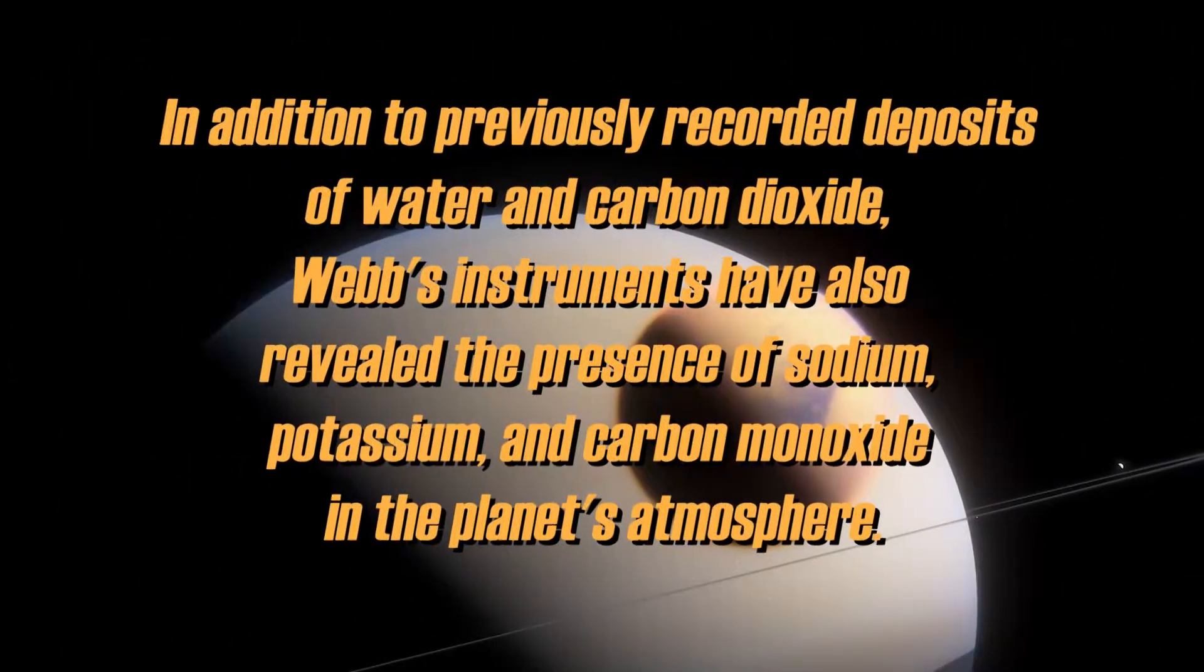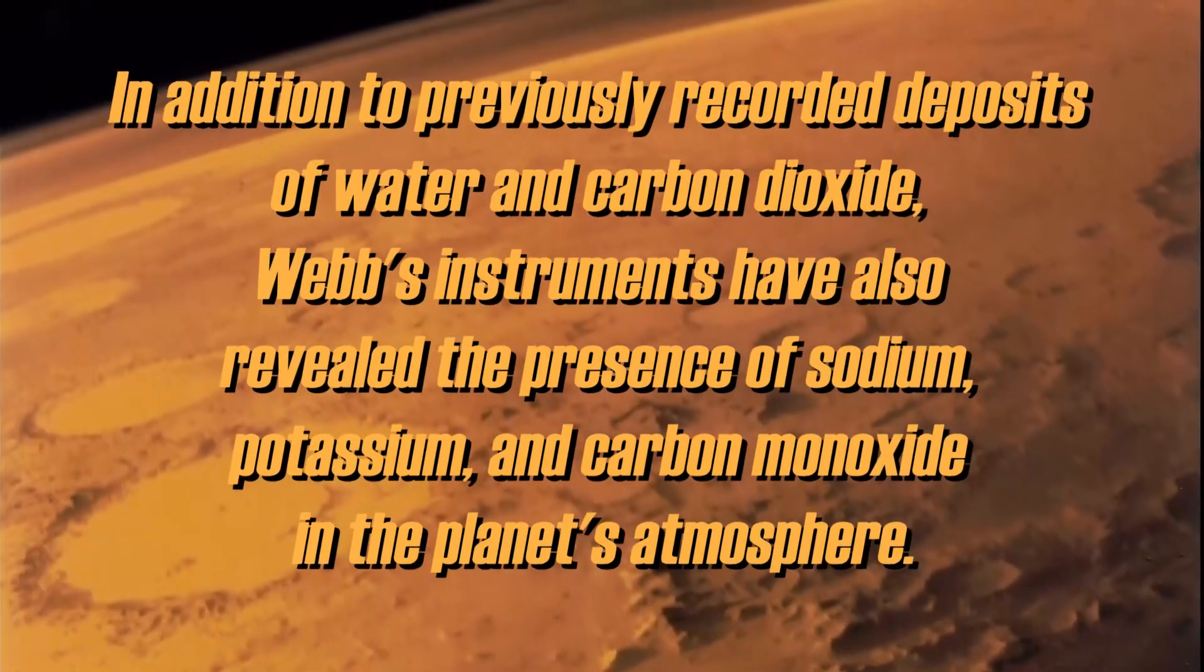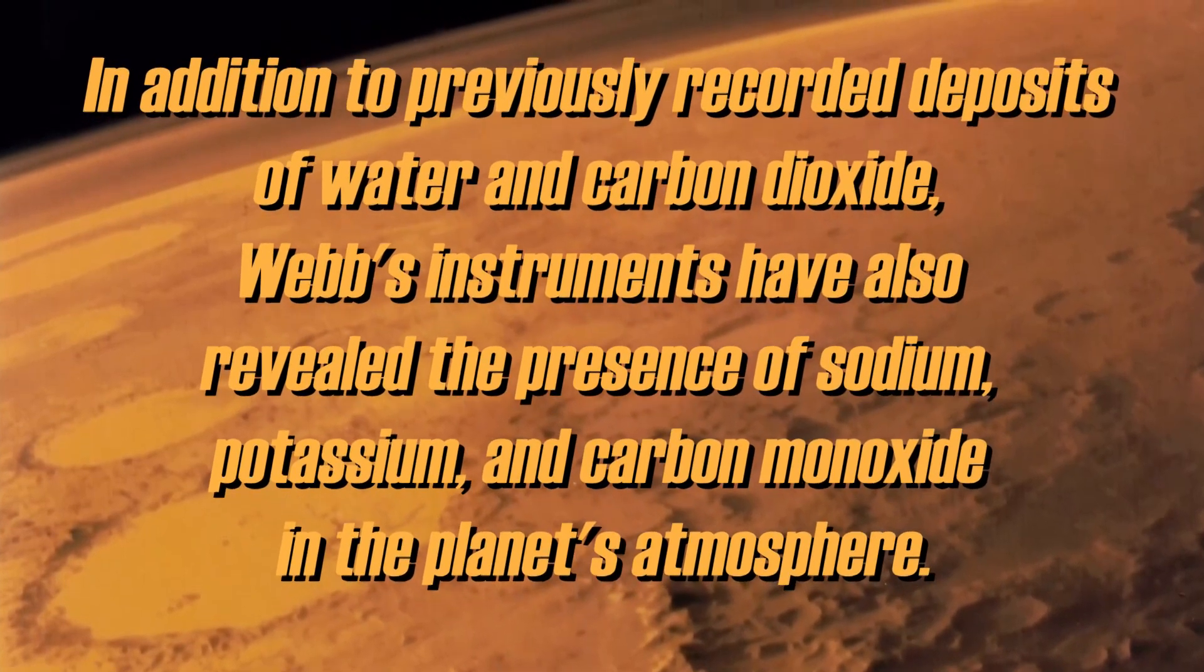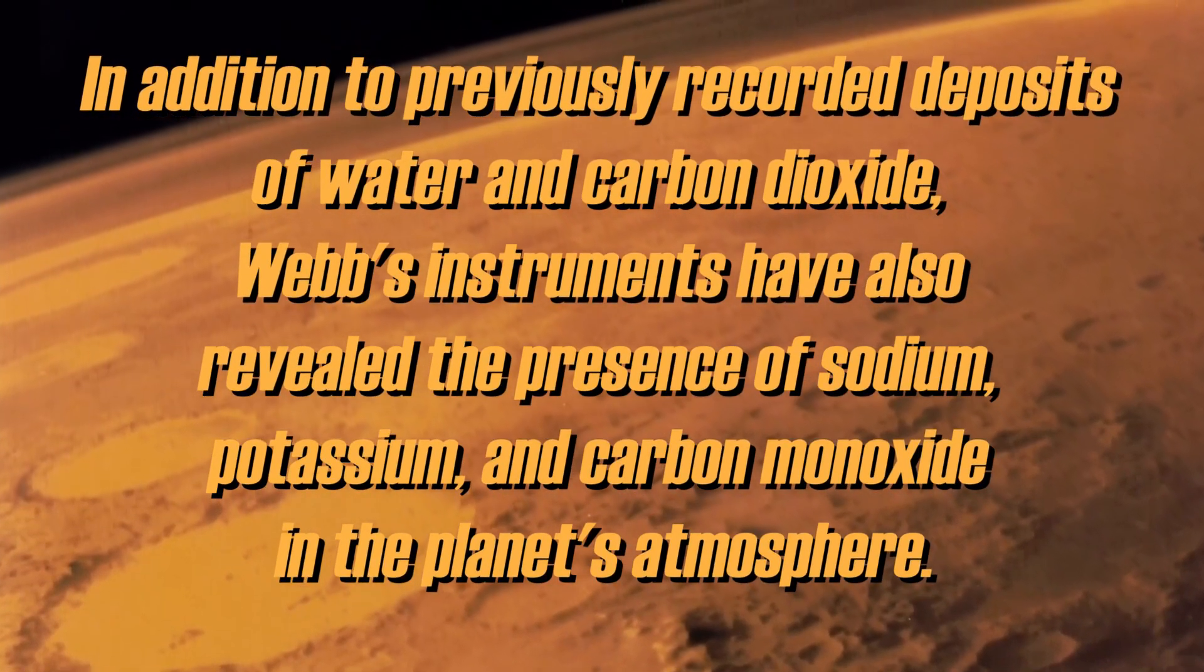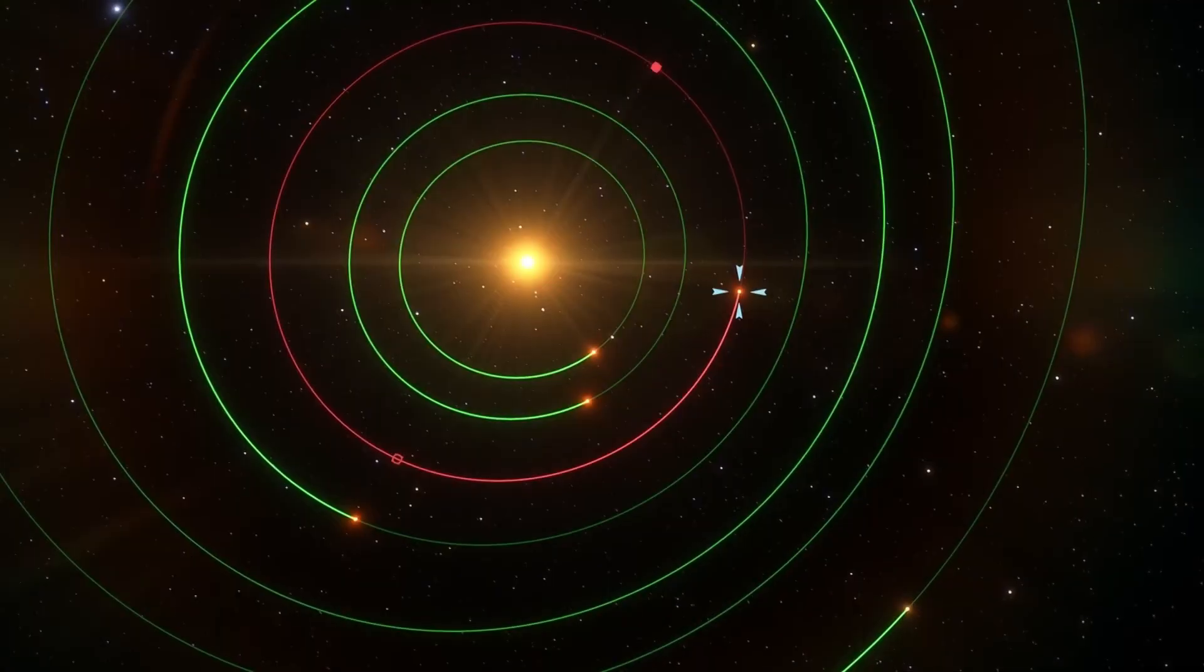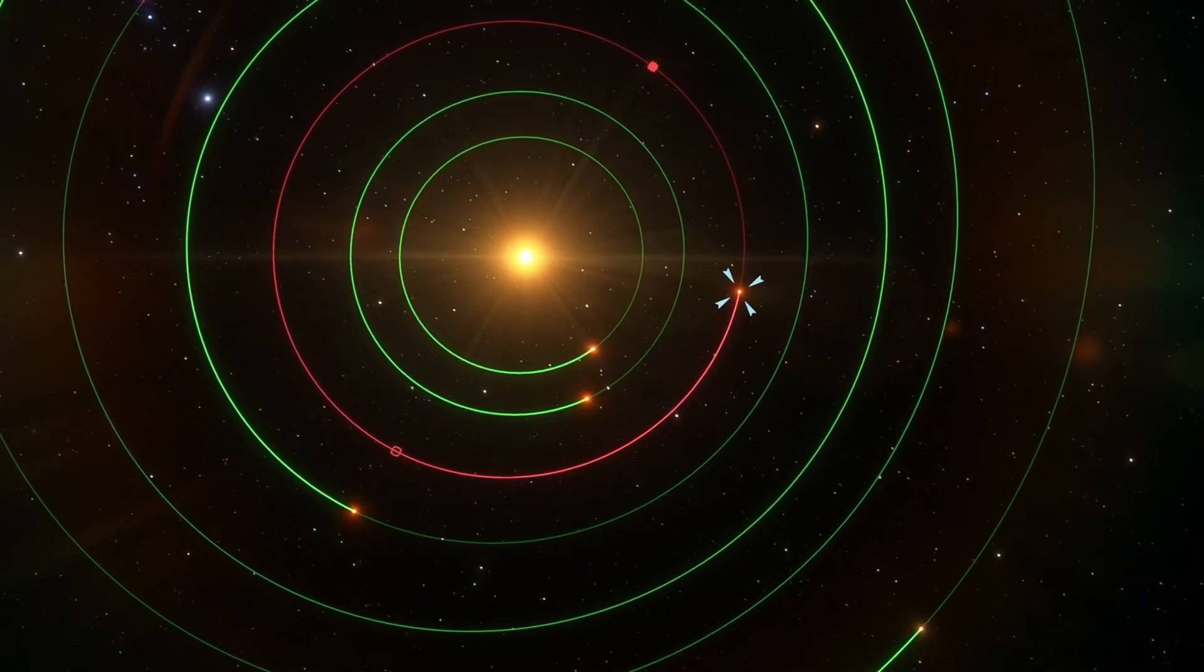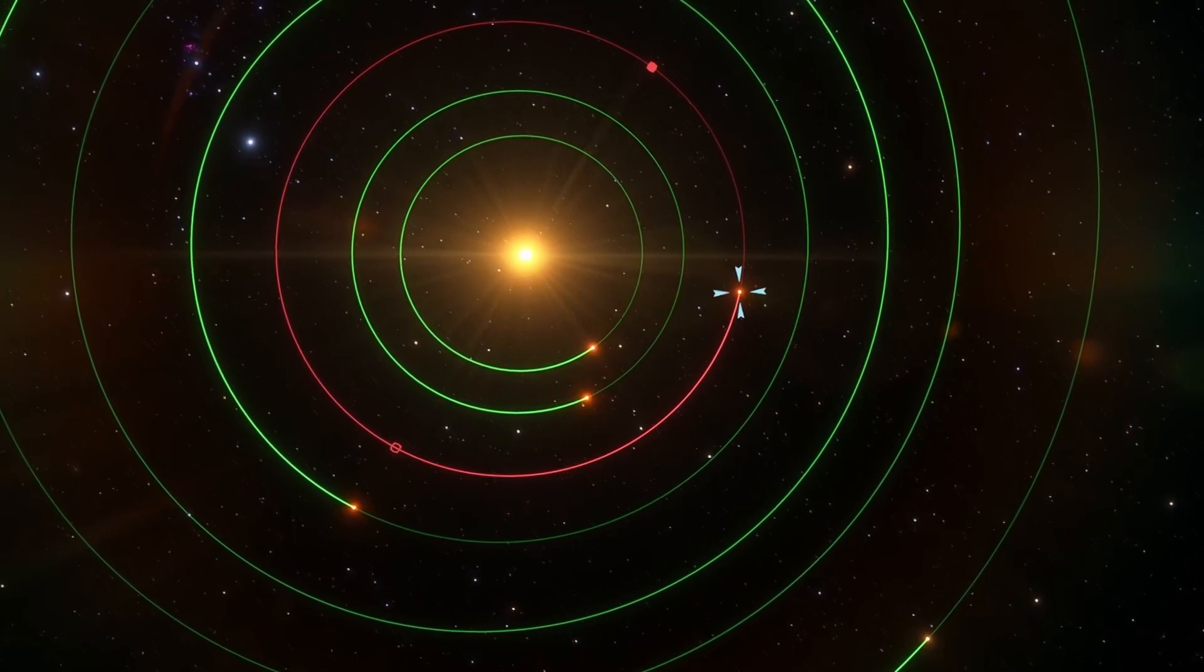In addition to previously recorded deposits of water and carbon dioxide, Webb's instruments have also revealed the presence of sodium, potassium, and carbon monoxide in the planet's atmosphere. At the same time, it has been discovered that the atmosphere of WASP-39b does not appear to contain methane, which is in significant contrast to some of the gas giants in our own solar system.